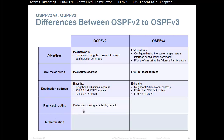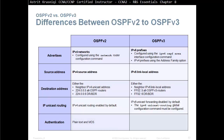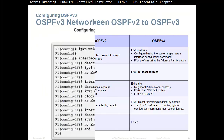IPv6 unicast routing is not enabled by default — in OSPF version 3 we do need to enable IPv6 unicast routing. OSPF version 2 supports plain text and MD5 authentication, while OSPF version 3 supports authentication through the use of IPSec.